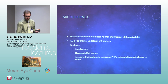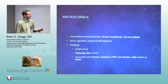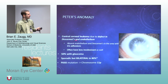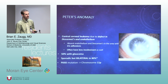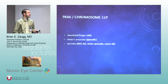Microcornea: less than 9 mm in a newborn, less than 10 in an adult — usually pretty flat corneas. Peters anomaly: anterior segment dysgenesis where Descemet's and endothelium are not appropriately formed, causing connections with the lens and iris. Lots of glaucoma, usually bilateral. Think PAX-6 mutations. Other PAX-6 mutations: Axenfeld-Rieger, Peters anomaly, and aniridia. Aniridia — sporadic versus familial: sporadic has higher risk of Wilms tumor.